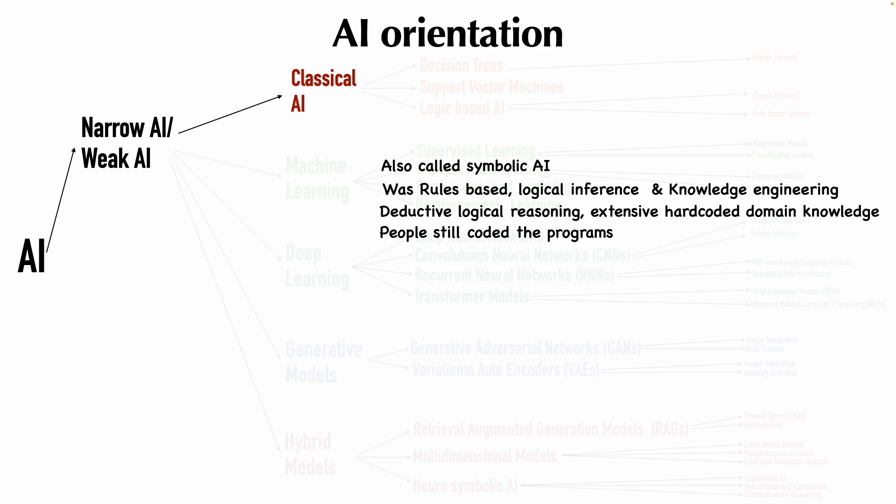Some of the things that came out of this classical AI were decision trees, support vector machines, and logic-based AI. And under decision tree, there was random forest, and logic-based AI gave rise to expert systems and rule-based systems. We won't be going through these things in a very detailed manner because that's not the intention. So let's continue.